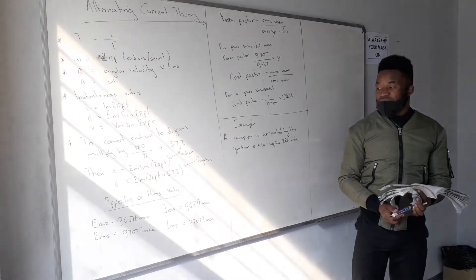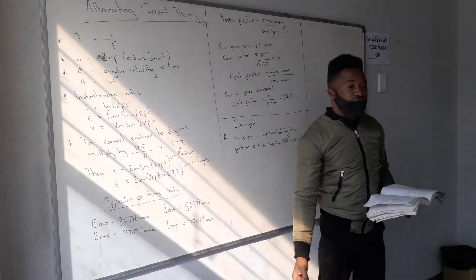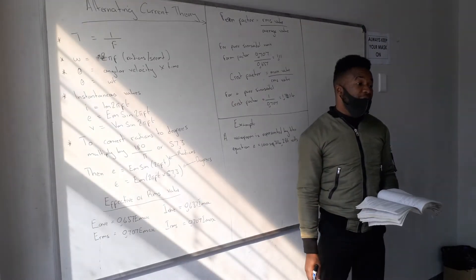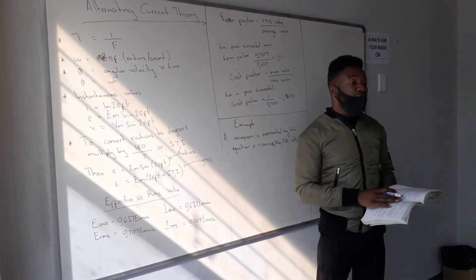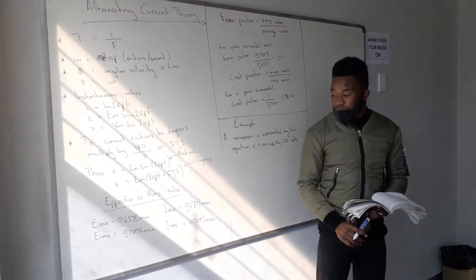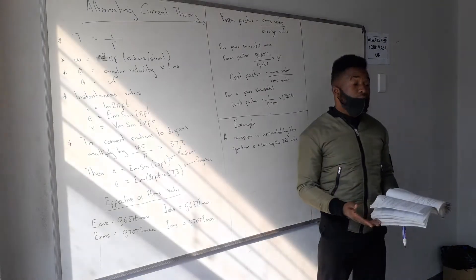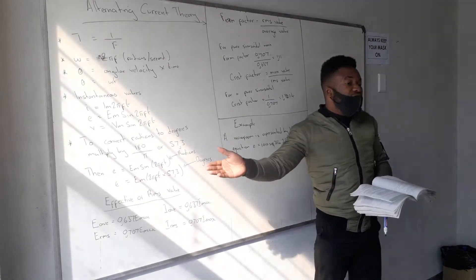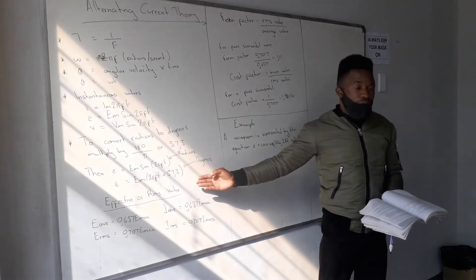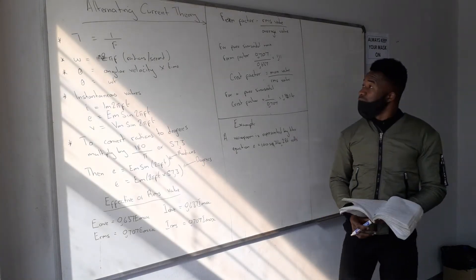You also have how to calculate the effective value — the RMS value — and the average value. The EMF average equals 0.637 multiplied by E-max, where E-max is the maximum value. The same thing for RMS: E-RMS equals 0.707 multiplied by E-max. They can ask you to calculate the average or RMS of the EMF or current.